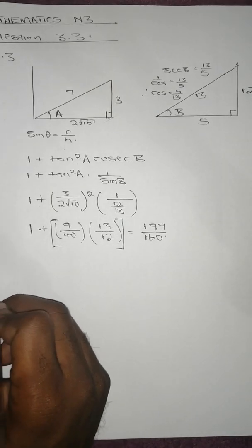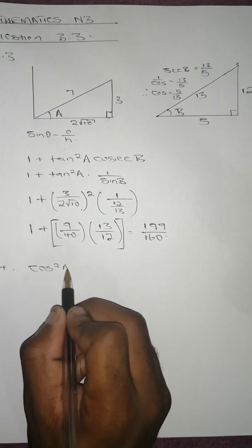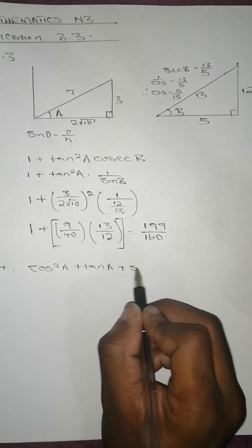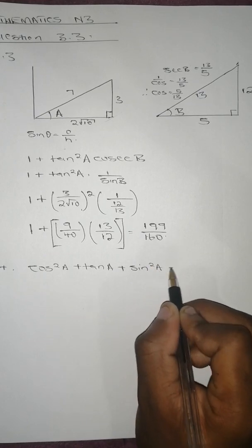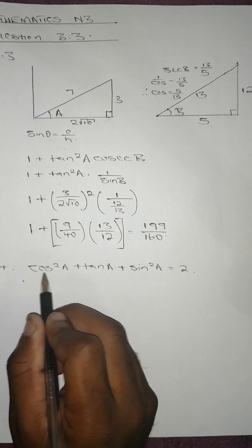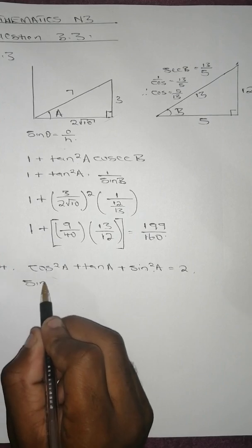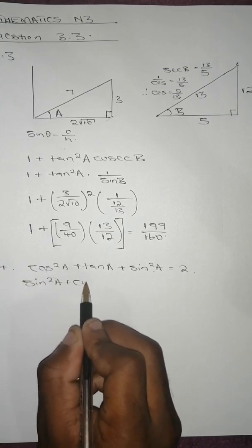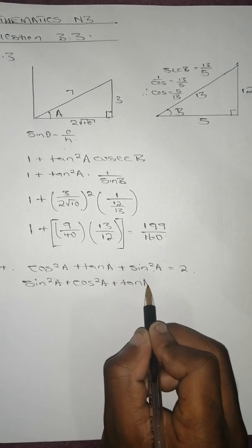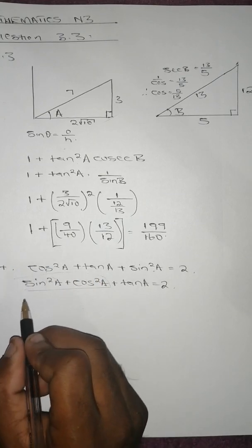Question 3.4: calculate the values of a for cos squared a plus tan a plus sine squared a equals 2. We rearrange this as sine squared a plus cos squared a plus tan a equals 2. From the Pythagorean identity, sine squared a plus cos squared a equals 1.